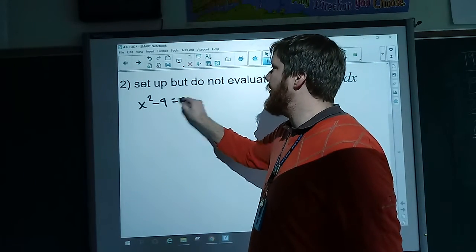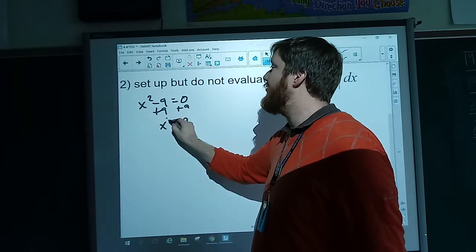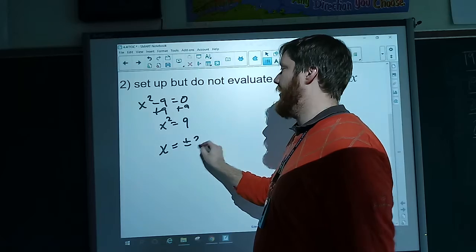We say x squared minus nine equals zero, and we add the nine to both sides. We get - I'm sorry, x squared is equal to nine. We take the square root, and we get x is equal to plus or minus the square root of nine.